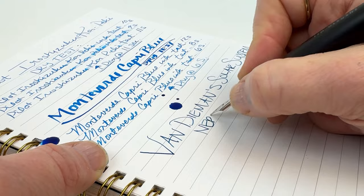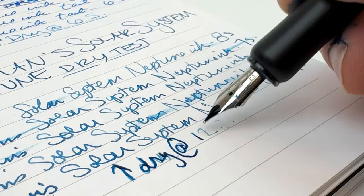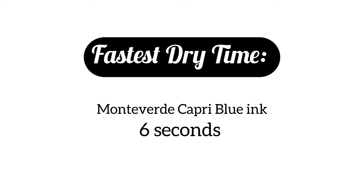After all six were given the dry test, the Monte Verde Capri Blue ink dried the fastest at six seconds. Krishna Free Range Blue wasn't far behind at a 10-second dry time. Pilot Iro Shizuku Konpiki was at 11 seconds. Neptune dried in 12 seconds. Diamine Asa Blue was 22 seconds, and Robert Oster School Blue was 25 seconds.